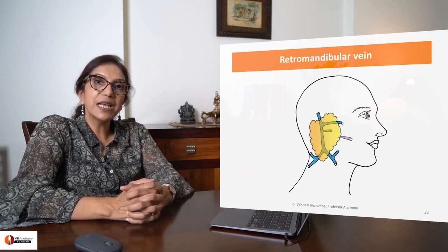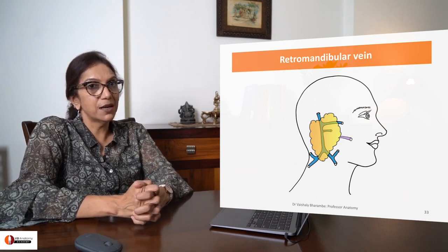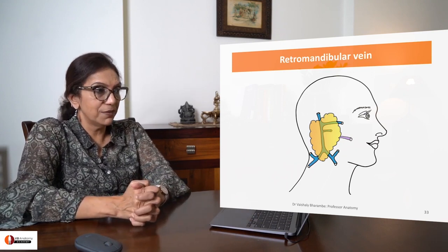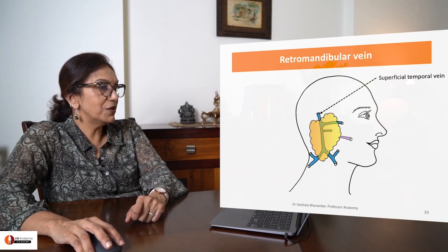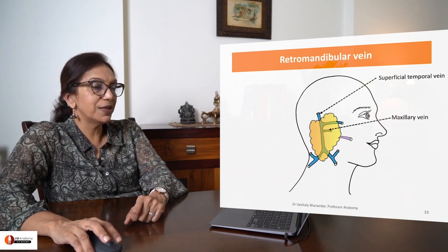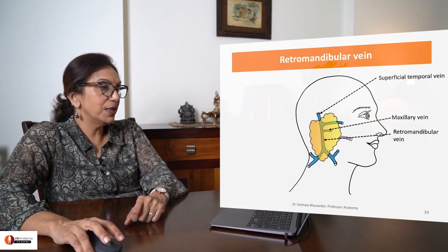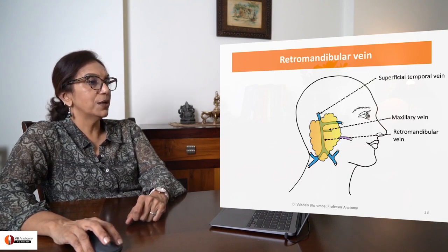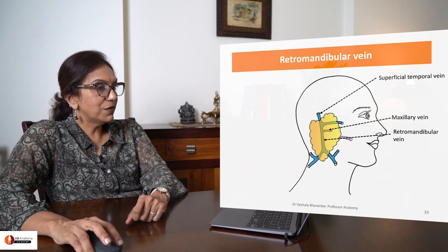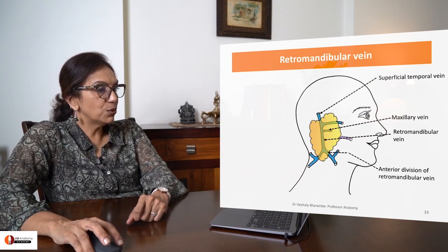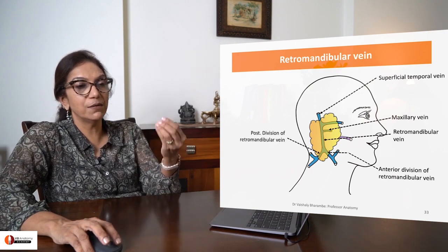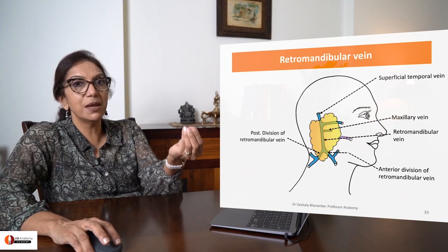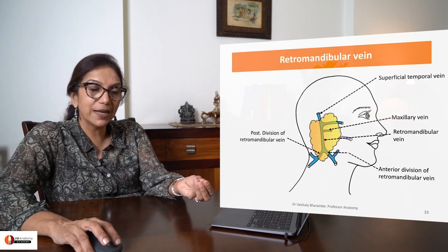Let's come to the next content: the retromandibular vein, which is formed by the union of the superficial temporal with the maxillary vein, forming the retromandibular vein, which finally divides into anterior and posterior divisions of the retromandibular vein close to the apex of the gland.